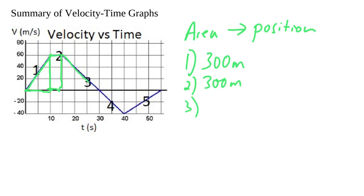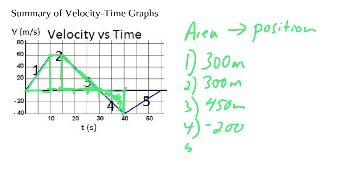For segment three, even though the slope is the same as segment four, two different things are happening so we split them up. Segment three: 60 times 15 divided by 2 is 450 meters. Segment four, we're going backwards so displacement is negative — 10 seconds times 40 meters divided by 2 is negative 200 meters. Segment five: 40 times 15 times one-half is negative 300 meters.